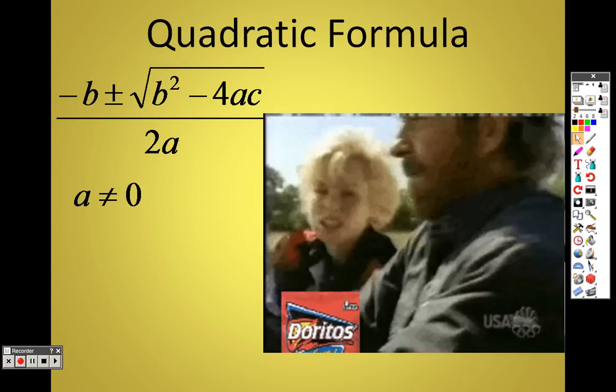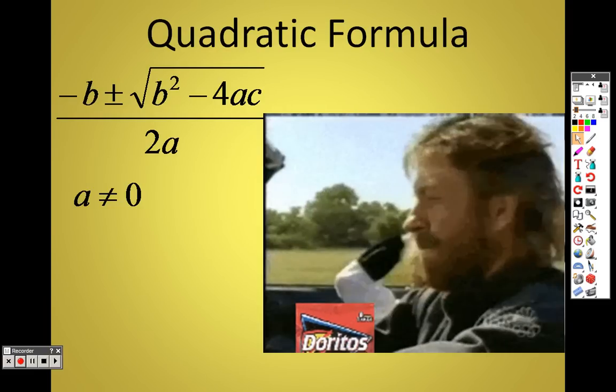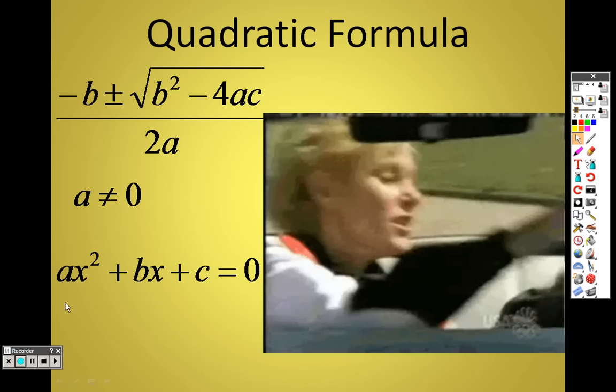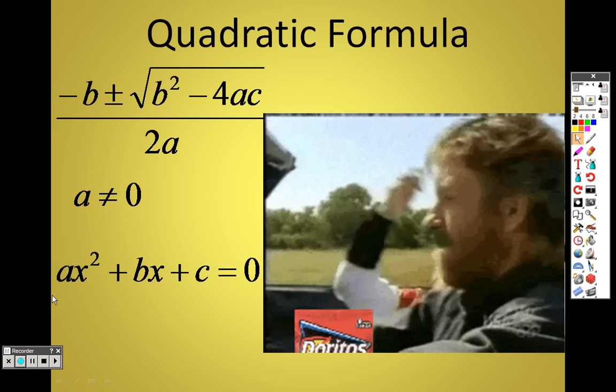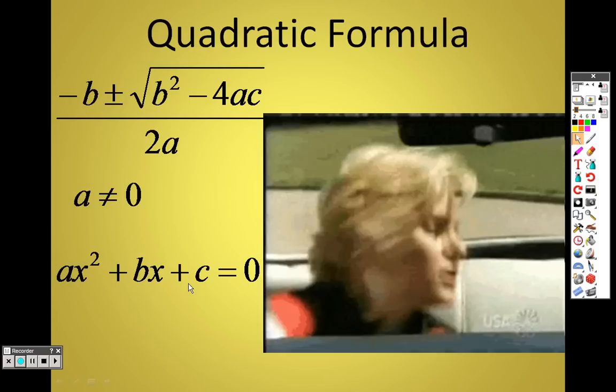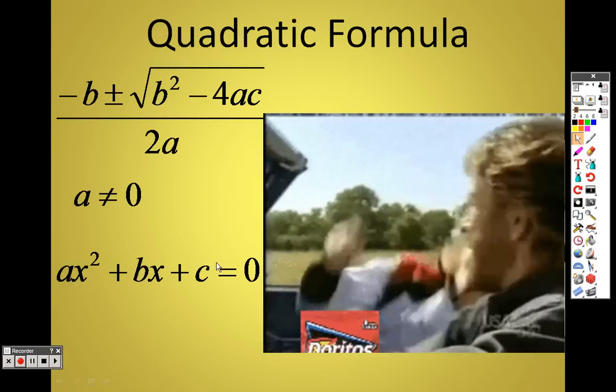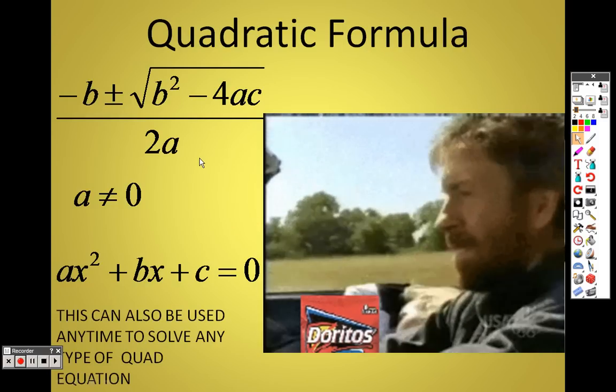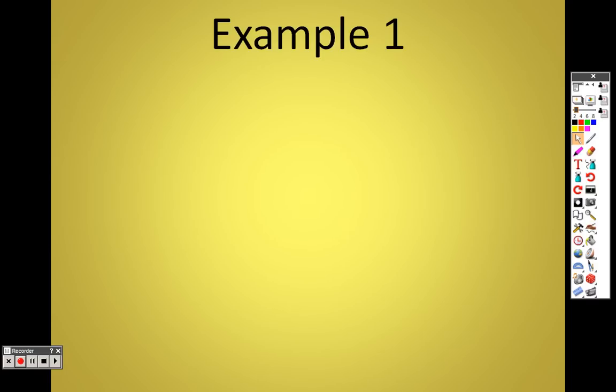A can't be 0 because you can't have something in the denominator that is 0 because it's undefined. And this is the form: ax squared plus bx plus c, where a is out in front of the x squared, b is out in front of the x, and c is the number all by itself. And you just plug them in accordingly to solve it. This can be used any time to solve any type of quadratic.